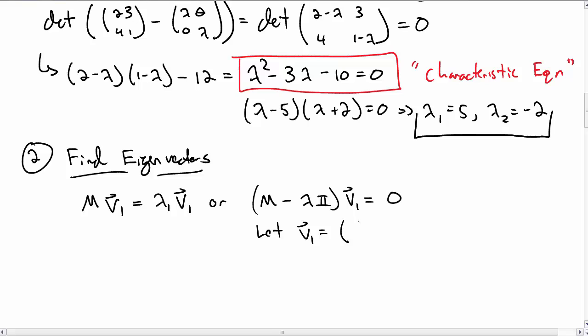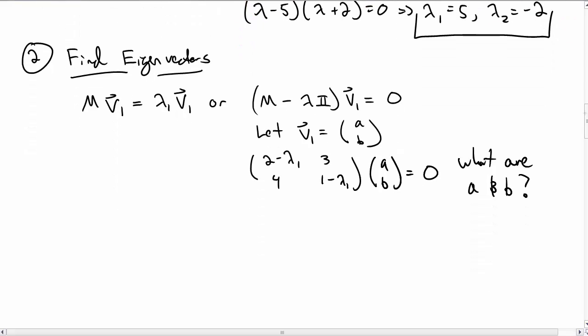So in order to find what V1 is let's let V1 be some arbitrary vector (A, B), where A and B are some constants we want to find. So let's write all of this out then. M minus lambda times I, we already calculated that. That's (2-λ, 3, 4, 1-λ) times the vector (A, B) is equal to 0. And our goal here is to figure out what are these constants A and B that make this true.